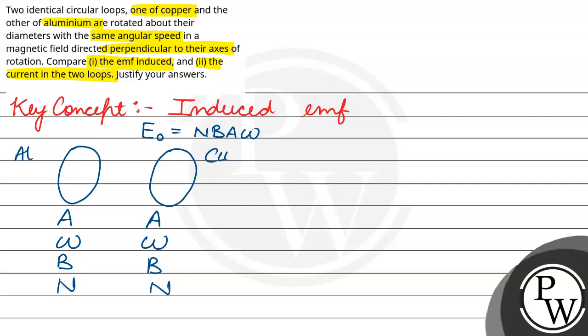So we can see that induced EMF, the maximum induced EMF is N B A omega. And the two loops have the same values for all these parameters. So the induced EMF will be the same for the two loops. They have the same induced EMF.